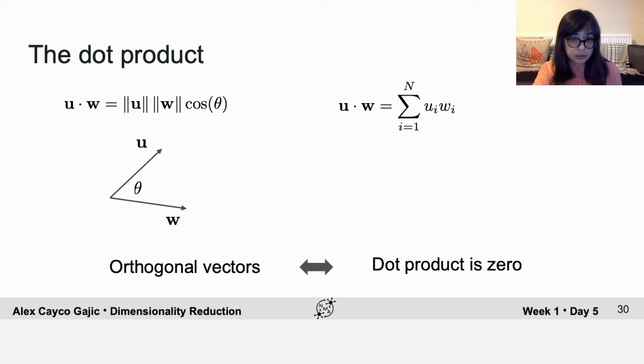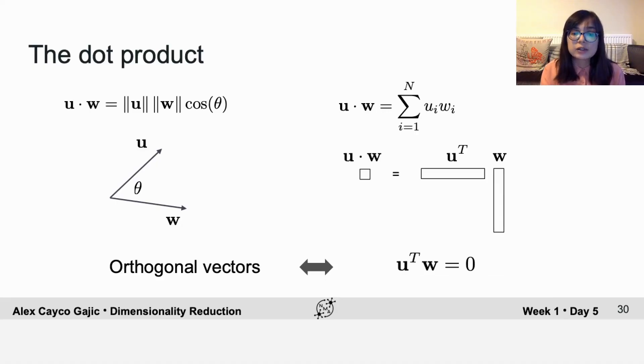That's much easier to calculate, especially in a vector format. So if u and w are both column vectors, then u dot w is u transpose times w. So this is a much easier way to test if two vectors are orthogonal is by taking u transpose times w.